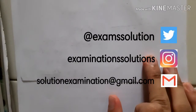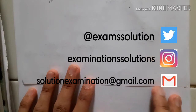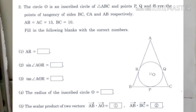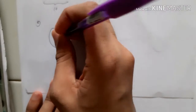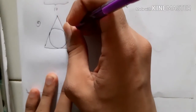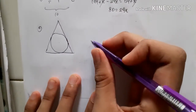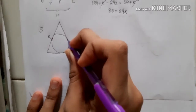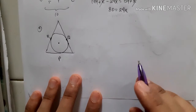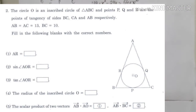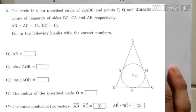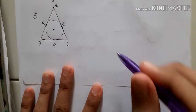Hello everyone, welcome to SENSU Math Part 2 of 2016. There's a triangle question: there's a circle O which is inscribed in triangle ABC. The circle is tangent to the sides, with tangent points named R, Q, and P on sides BC, AC, and AB respectively. We need to find the value of AR.